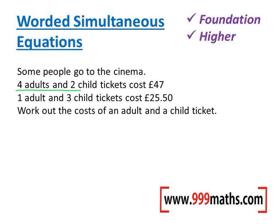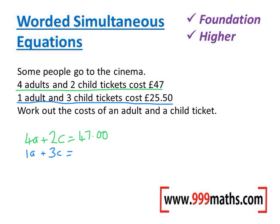The first equation is: four adults and two children cost 47 pounds. The second equation tells me that one adult and three children cost 25 pound 50, so I'm going to write that down as well: one adult and three children equals 25 pound 50.